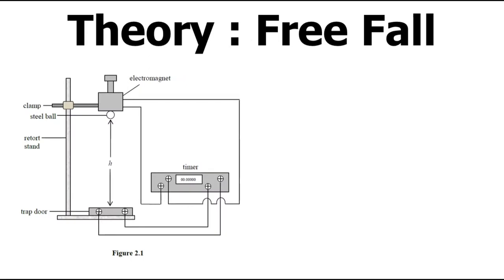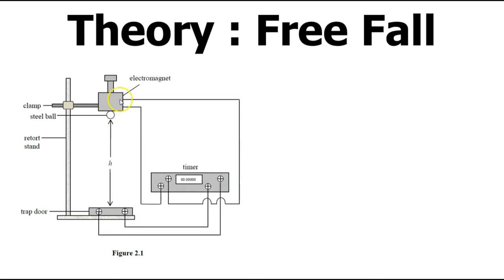The experimental setup is shown in figure 2.1. At the top, you have the electromagnet and a steel ball attached to the electromagnet. At the bottom, you have a trap door. The electromagnet and the trap door are connected to the timer. When the ball is released, it will trigger the start of the timer. When the ball hits the trap door, the timer will stop, giving the falling time of the steel ball.